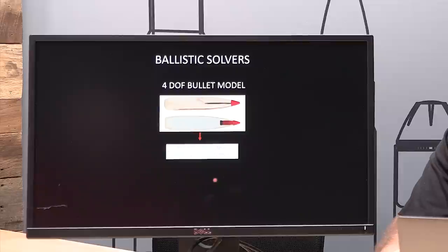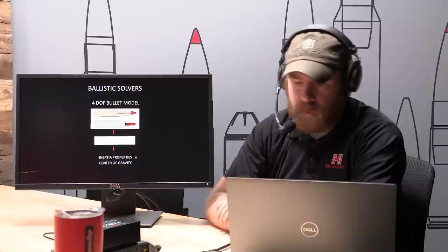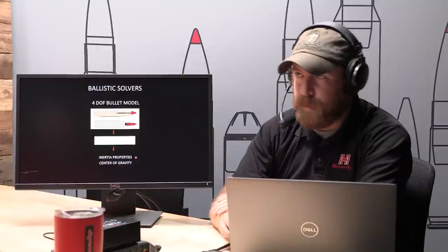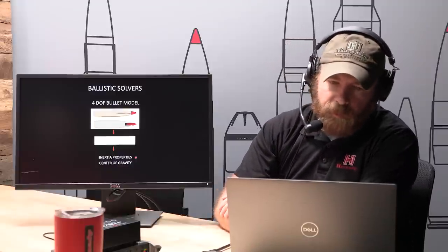From that software model we can pull out all the inertia properties of the bullet — its inertial tendencies — as well as the exact center of gravity location. We talked about center of gravity a bit in those older podcasts. So that's step two. Step one: fire it over the radar. Step two: generate the model.